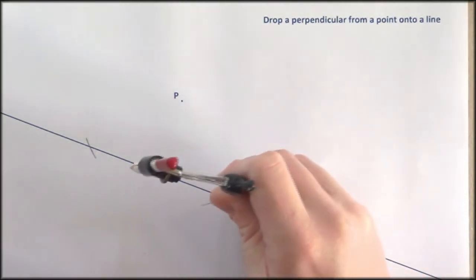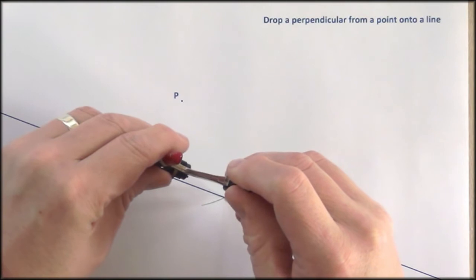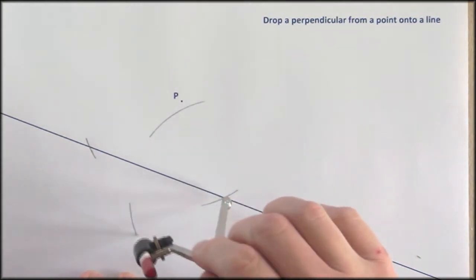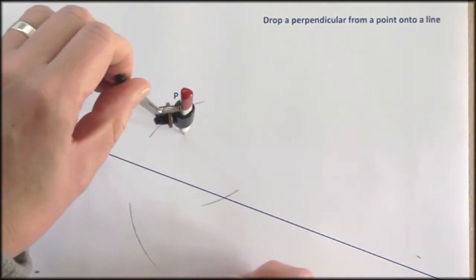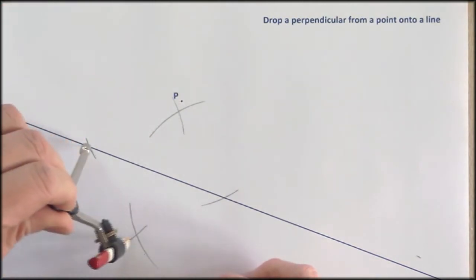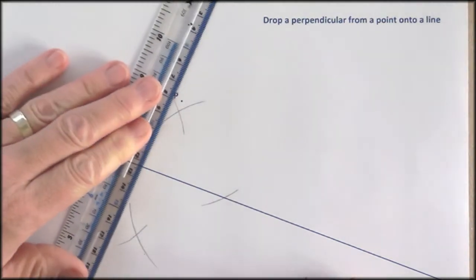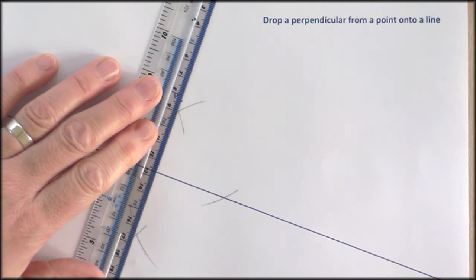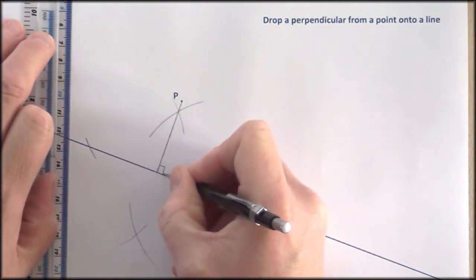Now I just need to make sure that the compass is more than half the distance — that already is, so I'll leave it set where it is. I'm going to draw some arcs either side of the line from that intersection point, and then over to this one, and cross that arc. Anything drawn through these two intersection points is going to be perpendicular to the original line, and therefore I can draw through the original point and drop my perpendicular there.